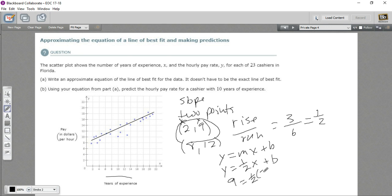And we'll put in 2 for x. And let's see, 1/2 times 2 is 1. And then I'd need to subtract 1 from both sides. So I would get b = 8 there. So our whole equation is going to be y = (1/2)x + 8.